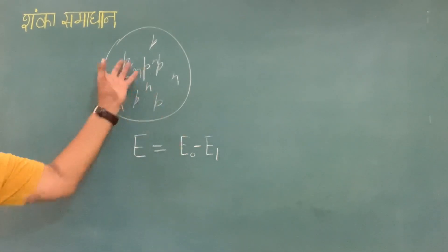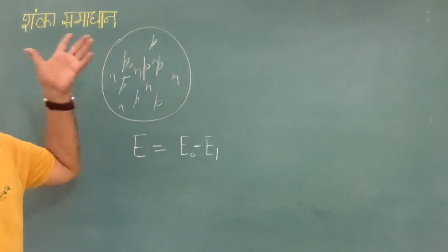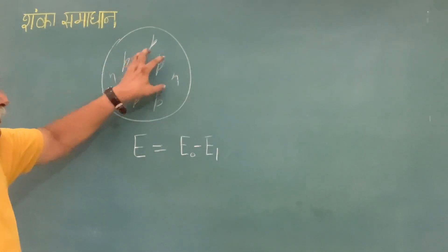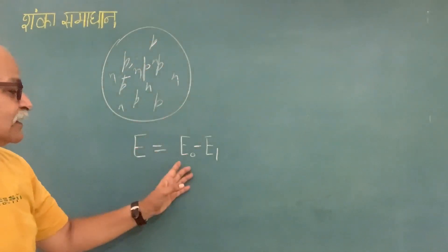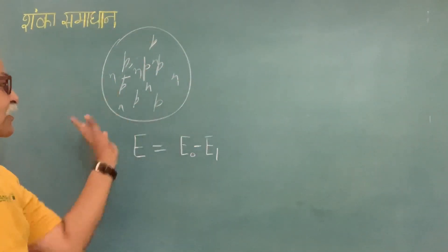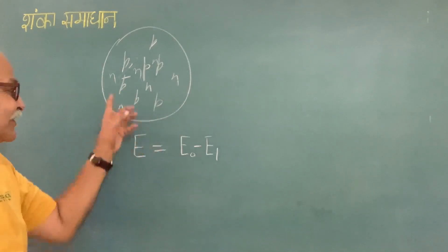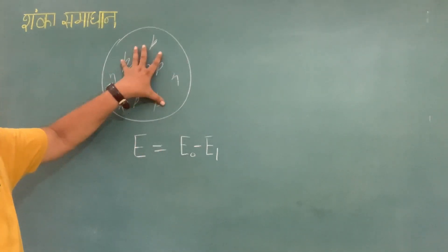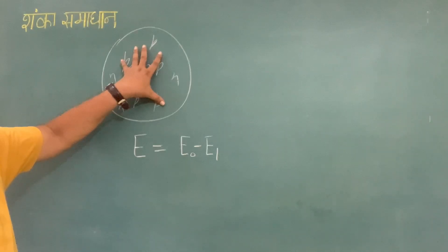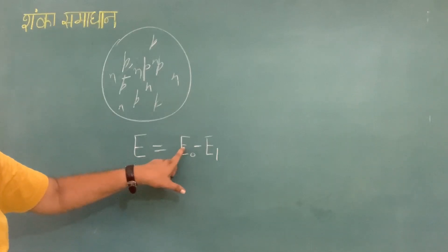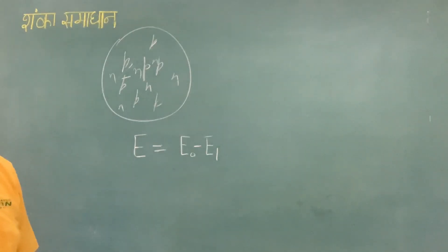To make them free, you have to supply energy — you have to break the nucleus. When you supply certain energy, only then these particles will become free. Therefore, the actual energy of the nucleus when it is at rest is the sum of the free rest mass energies of protons and neutrons minus E1, where E1 is the binding energy.